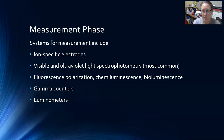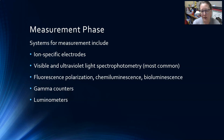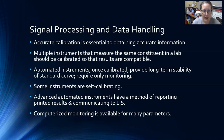In the measurement phase, there are different systems depending on the type of reaction occurring. We have ion-specific electrodes for many of our electrolytes, and visible and ultraviolet light spectrophotometry, which is the most common. On the immunoassay end of things, we have fluorescence polarization, chemiluminescence, bioluminescence, gamma counters, and luminometers.